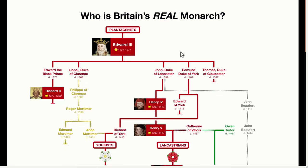Let's start with a quick recap of the Wars of the Roses. In the late medieval period, England had a king named Edward III from the House of Plantagenet. He had a nice long reign of 50 years and he had five sons, but because of his long life, he actually outlived his first two sons.